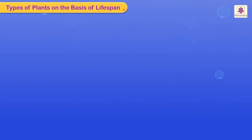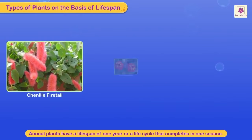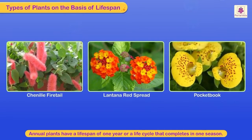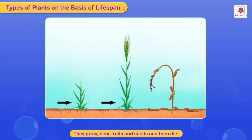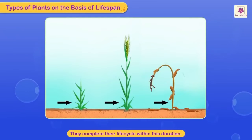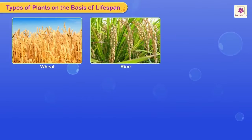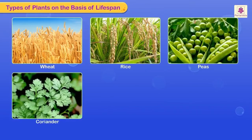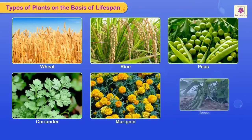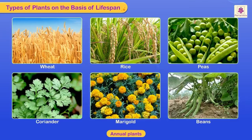Types of plants on the basis of lifespan. Annual plants are plants that have a life span of one year, or a life cycle that completes in one season. They grow, bear fruits and seeds, and then die, completing their life cycle within this duration. Wheat, rice, peas, coriander, marigold, and beans are annual plants.